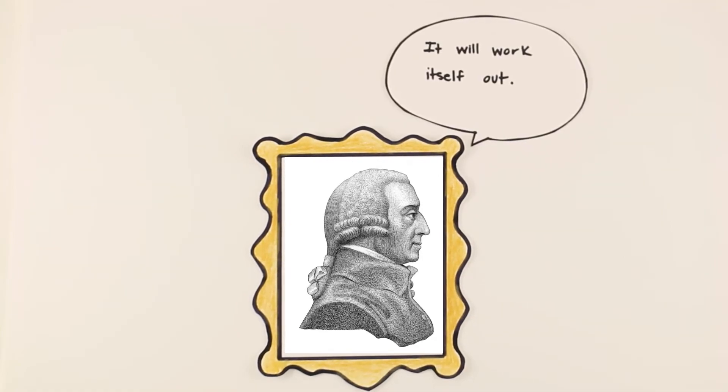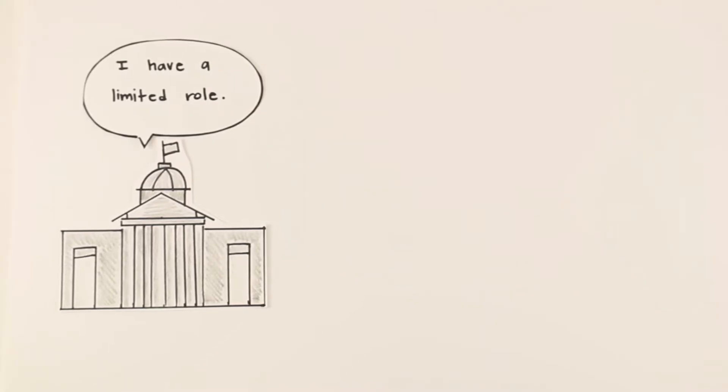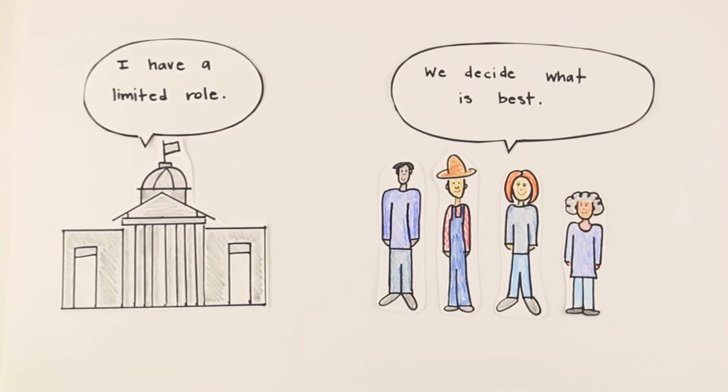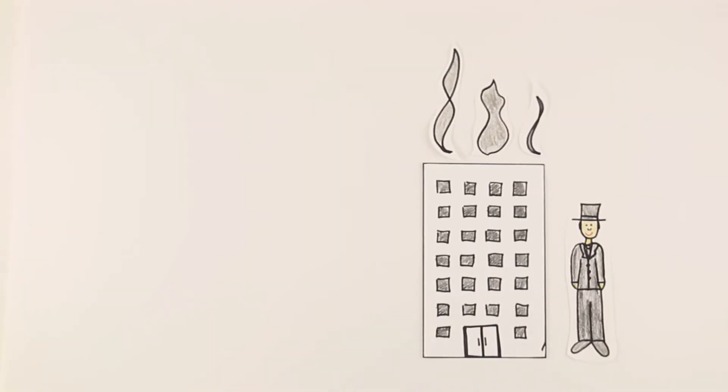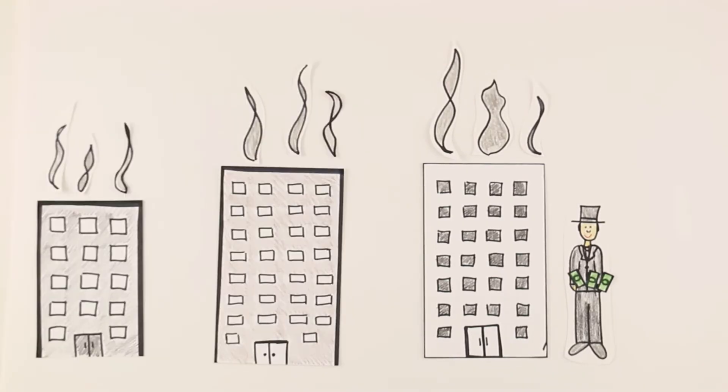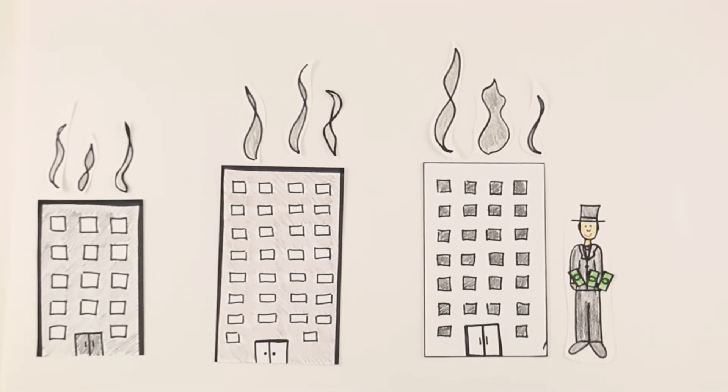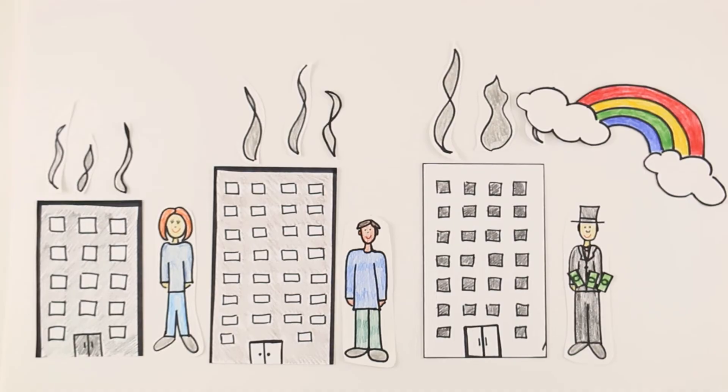He believed that the government should have a limited role in the economy because it is best for individuals to decide and do what is best for themselves. For example, Smith believed that if a wealthy factory owner makes more money, he will build more factories, provide more jobs, and benefit society overall.